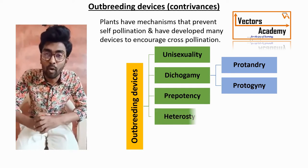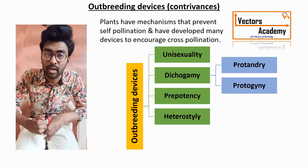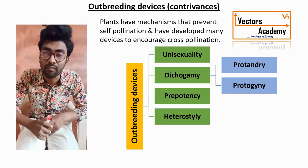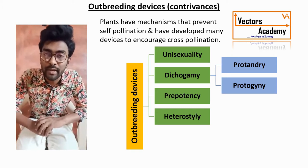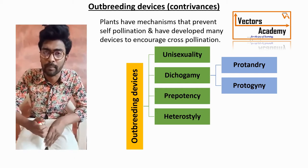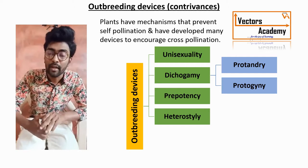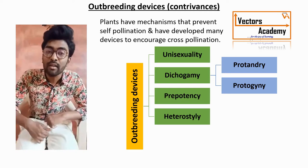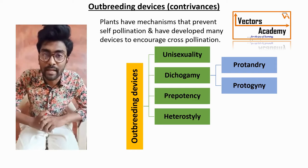The fourth outbreeding device is heterostyly. 'Hetero' stands for different and 'styly' stands for style. Here, flowers generally produce two different lengths of style. In a plant like primrose, there are two to three different types of flowers having different locations of the stigma and anther. If the stigma and anther are placed at two different points, the pollen grain cannot easily pollinate on the stigma of the flower.